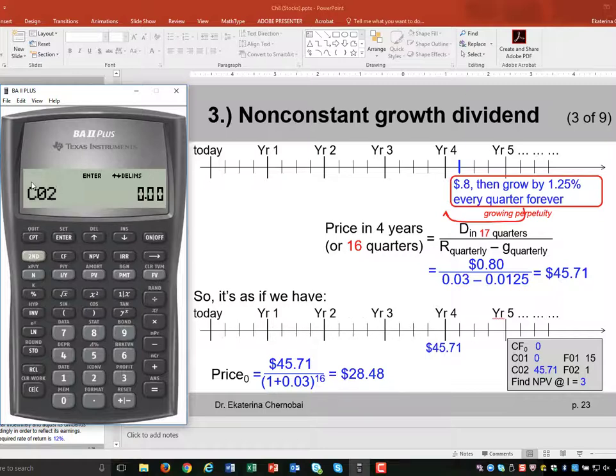So what's cash flow two? This is the next cash flow, end of quarter 16. Actually, it's not even a dividend. It's the sum of all remaining future dividends from that point on. Remember 45.71 was the discounted sum of all perpetual growing dividends after this point on. So cash flow two is 45.71. Enter. Down.